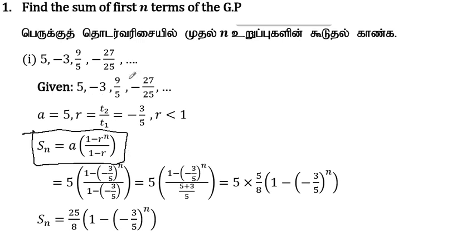Now in this sequence, the first term is 5. The common ratio r is term 2 divided by term 1: minus 3 divided by 5, so r = -3/5. The SN formula is a into 1 minus r to the power n, divided by 1 minus r, with a equal to 5.